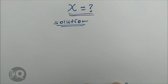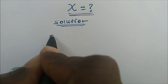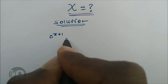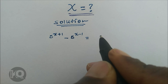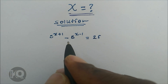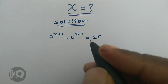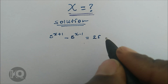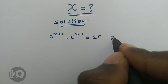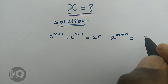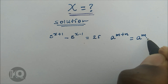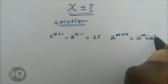In the first step we recall the problem: 5 to the power of x plus 1 minus 5 to the power of x minus 1, which is equal to 25. To solve this problem we apply the exponential rule, which is: a to the power of m plus n is equal to a to the power of m times a to the power of n.